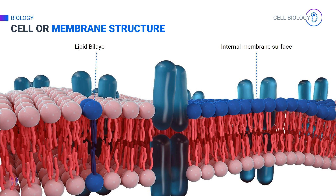They are composed of two layers known as a bilayer of phospholipids. The phospholipids are arranged so that their water-loving heads face the outside and the water-hating tails face each other on the inside. Because of this arrangement, the phospholipids have some movement and the bilayer is flexible.